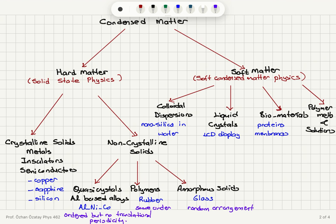In soft matter, we have colloidal dispersions — for example, nanosilica in water — liquid crystals used in LCD displays, biomaterials such as proteins and membranes, and polymer melts and solutions. These are all topics studied in soft condensed matter physics.